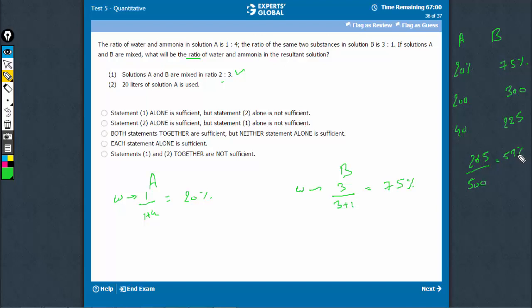For example, 53% water means the water to ammonia ratio is 53:47. So statement 1 is sufficient.